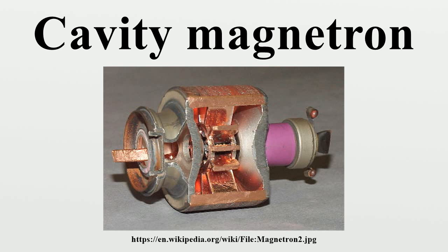The original magnetron was very difficult to keep operating at the critical value, and the number of electrons in the circling state at any time was fairly low, meaning it produced very low power signals. The first major improvement was the split anode magnetron, also known as a negative resistance magnetron. As the name implies, this design used an anode that was split in two, creating two half-cylinders.